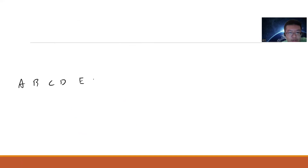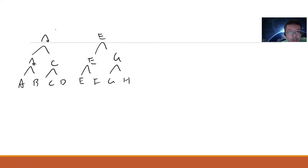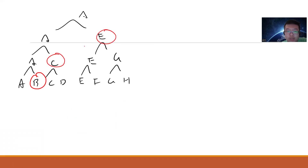Now let's consider a bigger case: a-b, a-c, d-c, e-f, e-g, h-g, a-e, a. Which one can be second? B can be second because b only loses to a. C can be second because c only loses to a. E can be second — only loses to a. D cannot be second because d already loses to c. F cannot because f already loses to e, and g already loses to e. So we have three candidates.